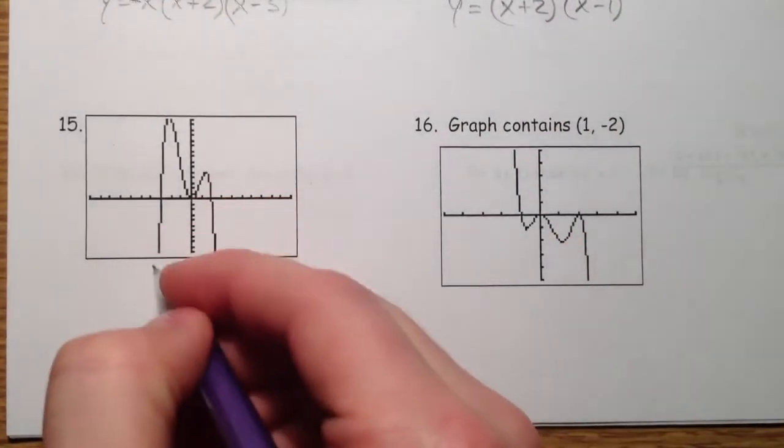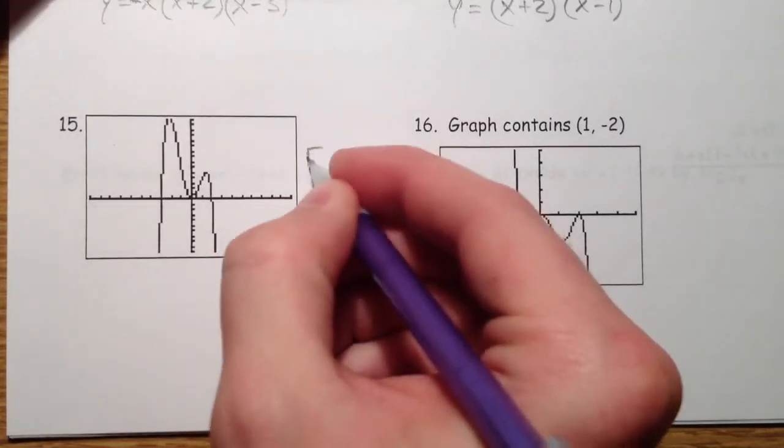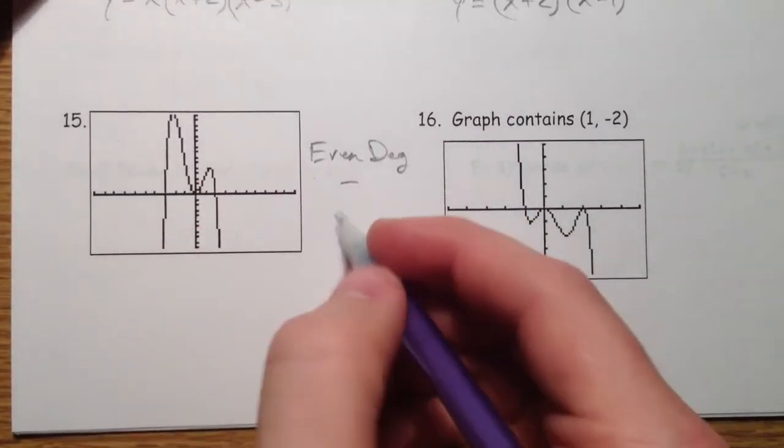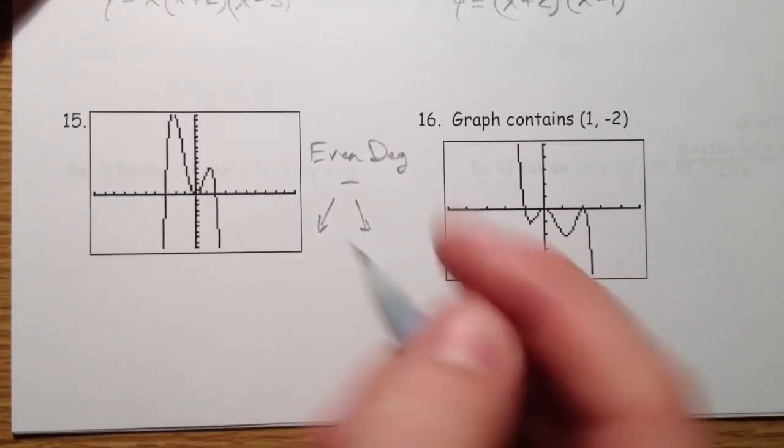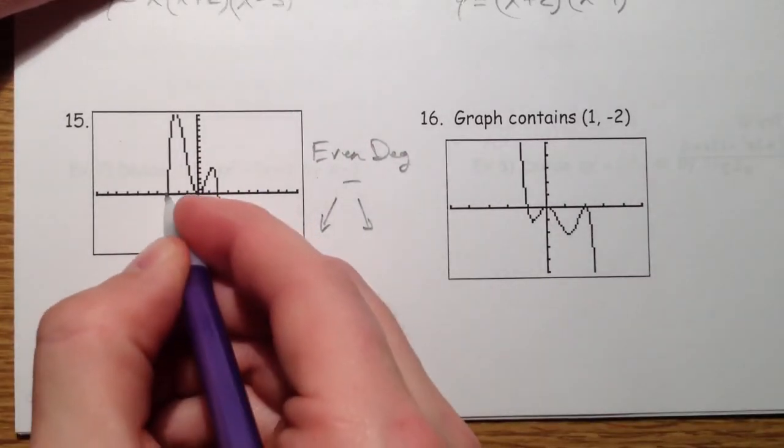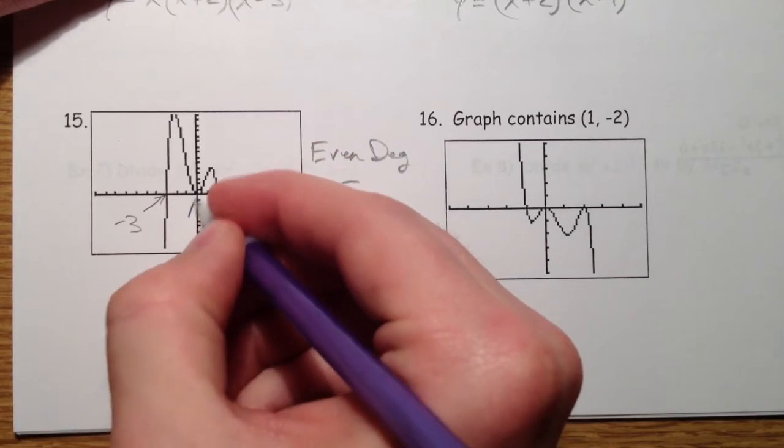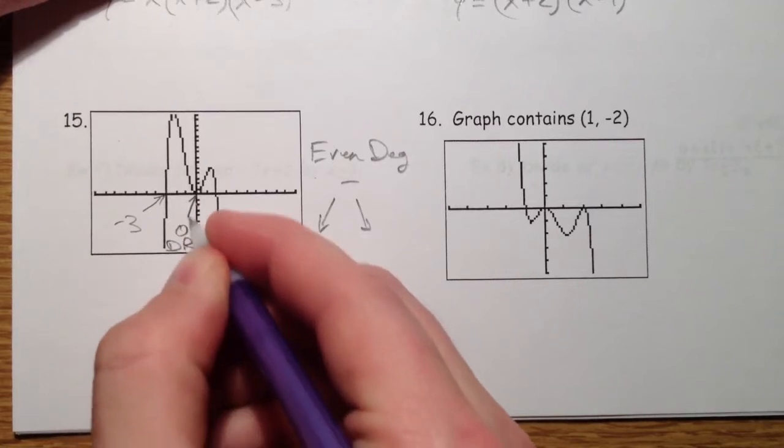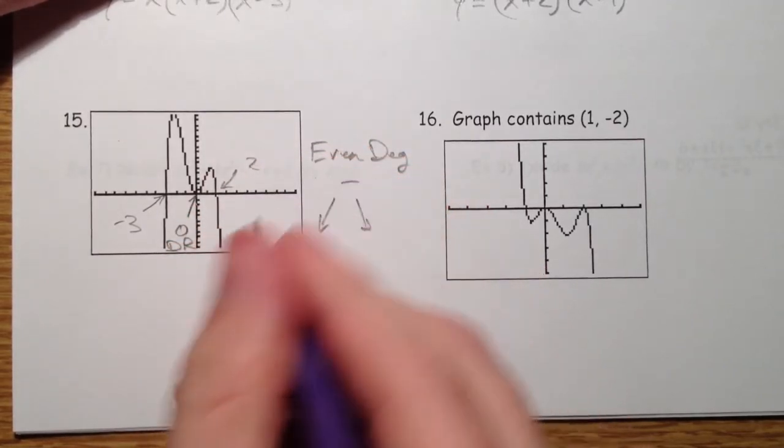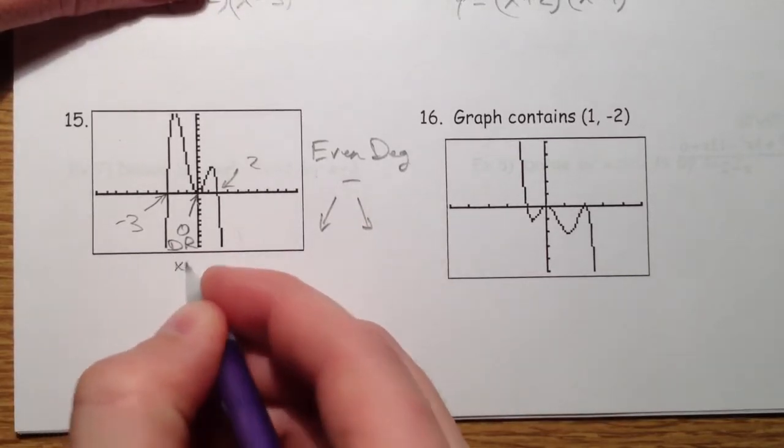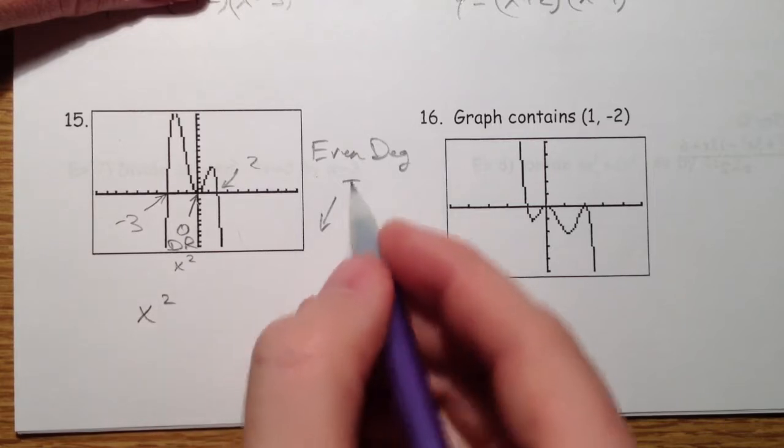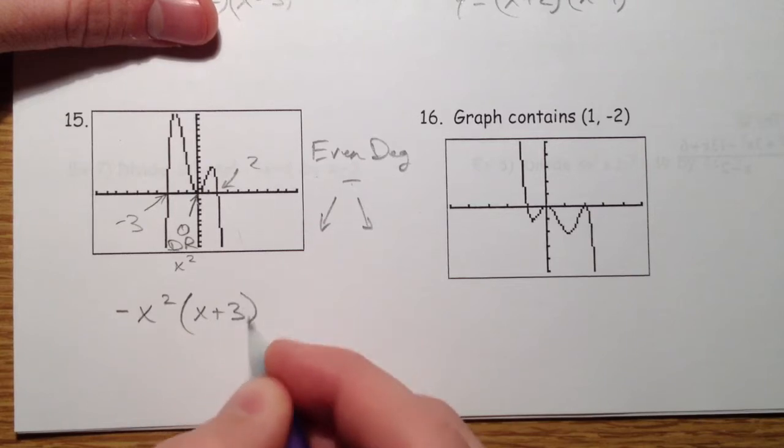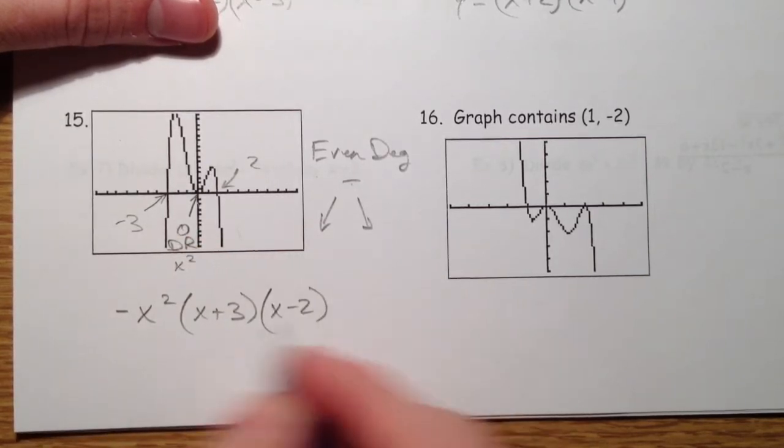Let's try another. This one opens down. So this has got to be an even degree that is negative. Because it's both going the same directions down. So at negative 3, at 0, well that's a double root. Because it's coming down in tangent. And at 2, it's a single root. So this is x squared for that one. x squared. We said it had to be a negative one. So I'm going to stick a negative in front of the x squared. x plus 3 for the negative 3. And x minus 2 for the positive 2.